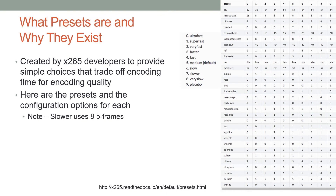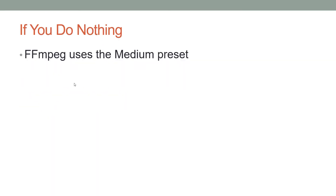Presets were created by x265 developers to allow simple trade-offs between encoding time and quality. Ultra-fast is high-speed, low-quality; placebo is very low-speed, high-quality. If you go to the x265 presets URL, you'll see all the decisions related to each preset. If you don't specify a preset in the command string, FFmpeg will use the medium preset when encoding to x265 — so every command string we've looked at so far has used medium.